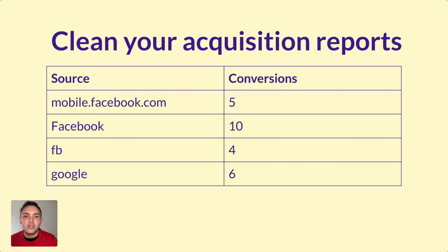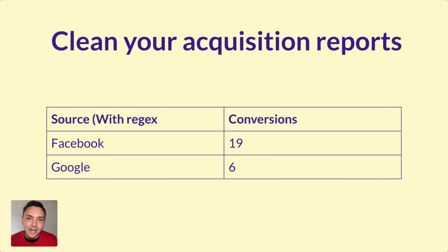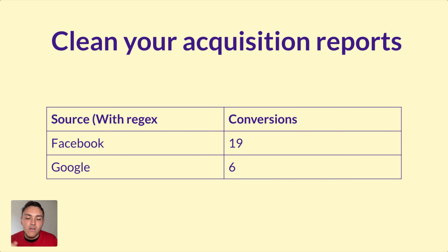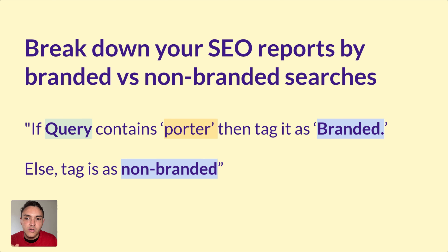Here's how the table looks: I have some conversions from mobile.Facebook.com, some from Facebook, some from FB, and six from Google. Facebook is actually being more representative, but the data is not clean. Once I tag them all as Facebook, I can see that Facebook in general actually has 19 conversions versus Google that has six. That's a use case for regular expressions on Google Looker Studio.